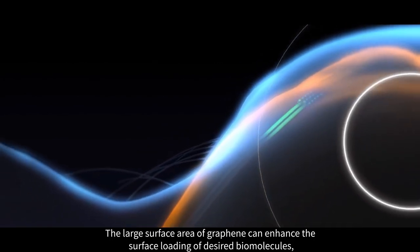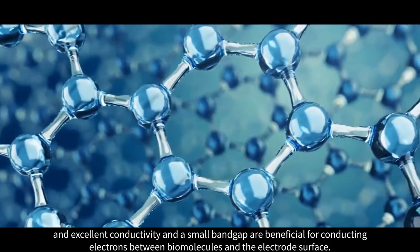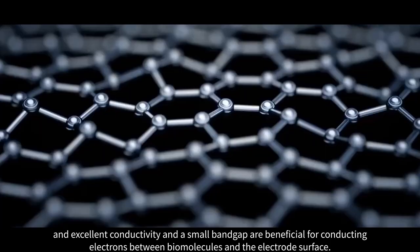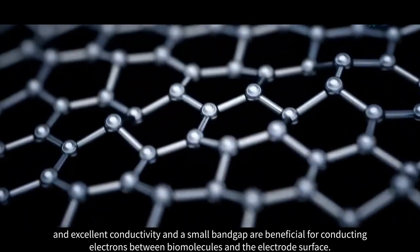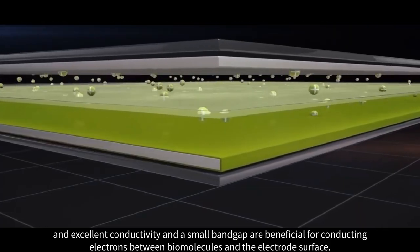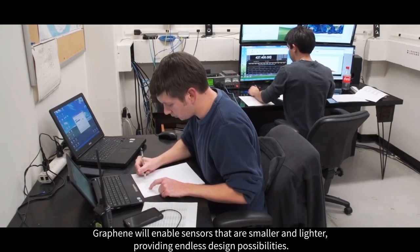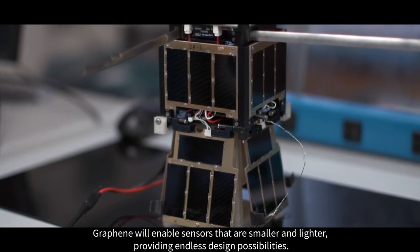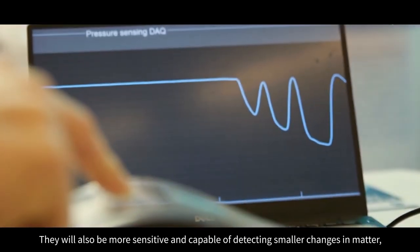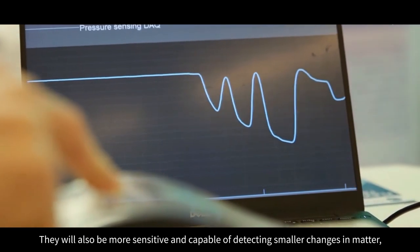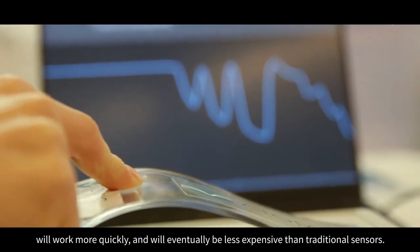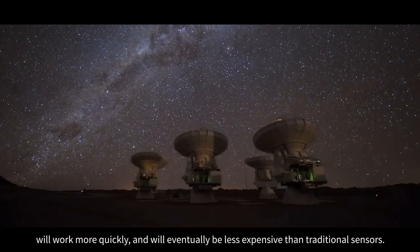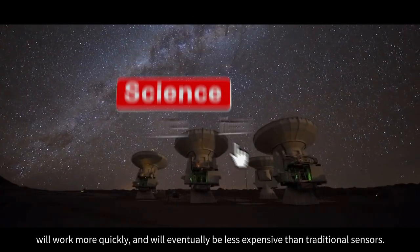The large surface area of graphene can enhance the surface loading of desired biomolecules, and excellent conductivity and a small band gap are beneficial for conducting electrons between biomolecules and the electrode surface. Graphene will enable sensors that are smaller and lighter, providing endless design possibilities. They will also be more sensitive and capable of detecting smaller changes in matter. The sensors will work more quickly and will eventually be less expensive than traditional sensors.